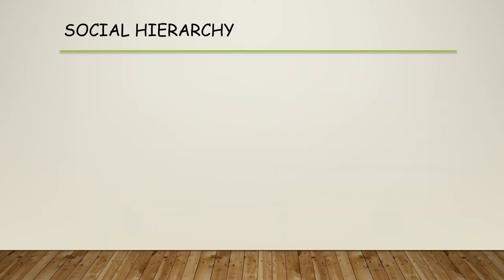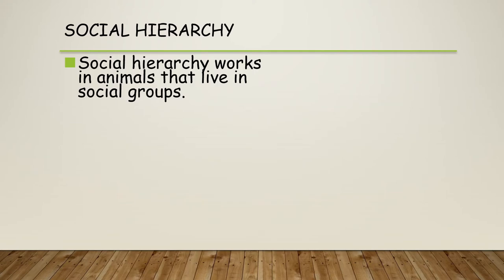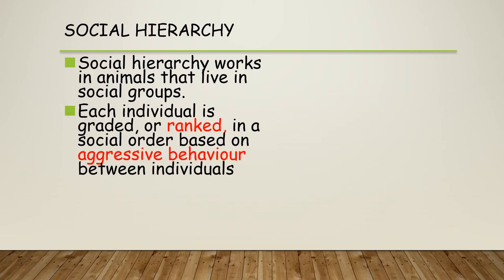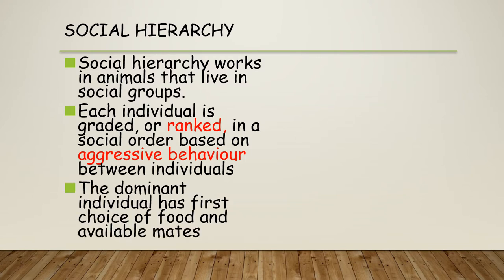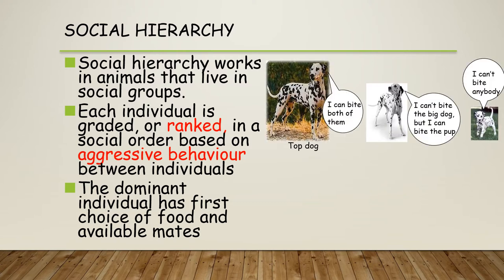Social hierarchy works in animals that live in social groups, and each individual is graded or ranked in a social order based on aggressive behaviour between individuals. We have dominant individuals and subordinates. The dominant individual has the first choice of food and available mates. If you have more than one dog at home, you'll have heard the term 'top dog' — the top dog can bite both of the dogs below it, the one in the middle can bite down but not up.